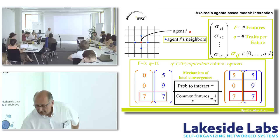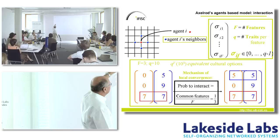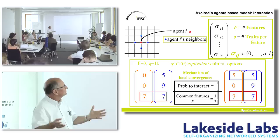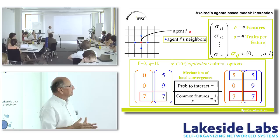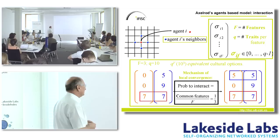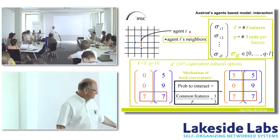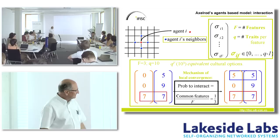Briefly technically: agents in a network are each characterized by cultural features — religion, language, etc. — each of which can take a number of possible values called traits. The number of traits per feature is an important parameter. Two agents sharing one of three traits interact with probability one-third, and the result is they become more similar.